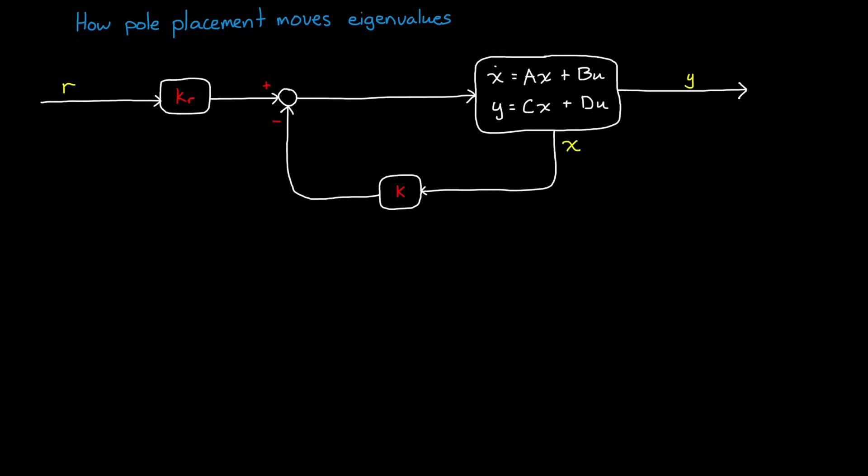With that behind us, we can now get into how pole placement moves the eigenvalues. Remember the structure of the controller that we drew at the beginning? Well this results in an input u equals r*Kr minus K times x, where r*Kr is the scaled reference, which again we'll get to in a bit, and Kx is the state vector that we're feeding back multiplied by the gain matrix. Now, here's where the magic happens.